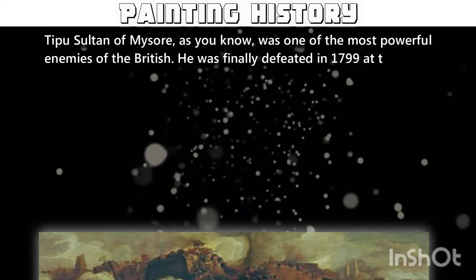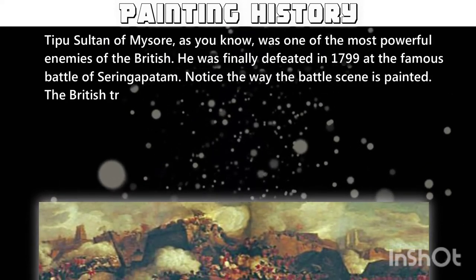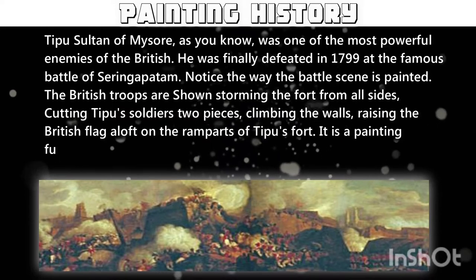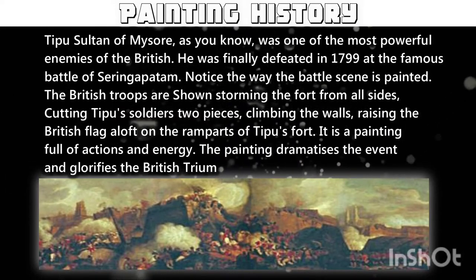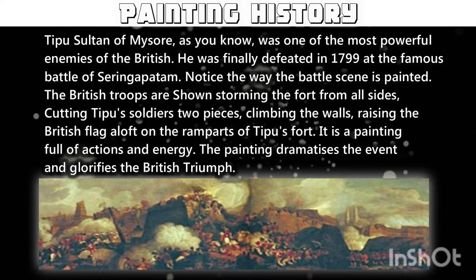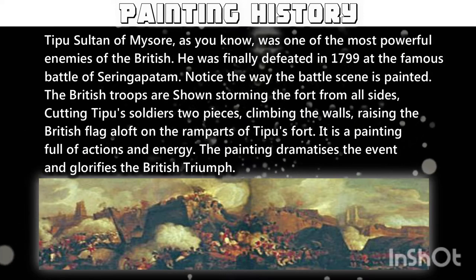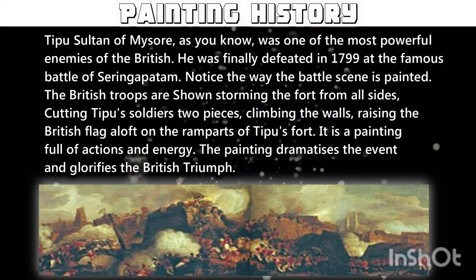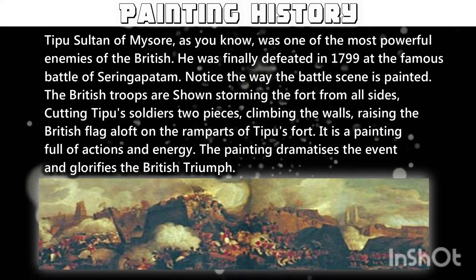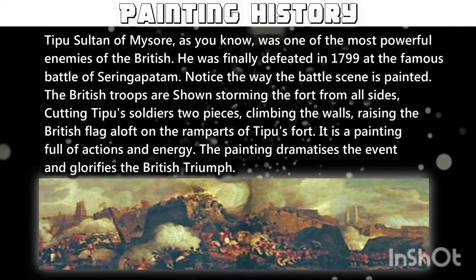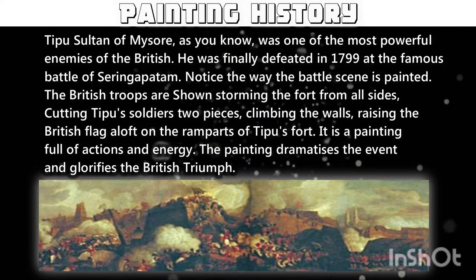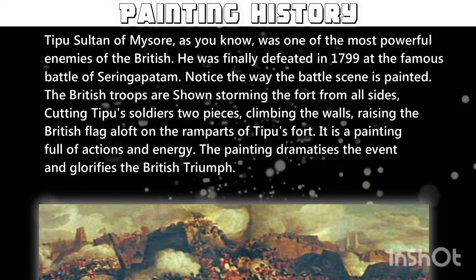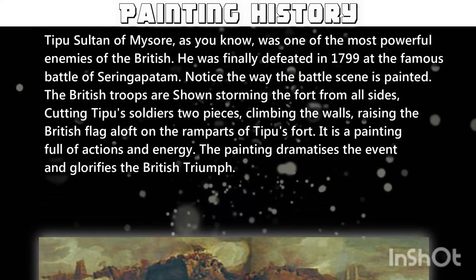In the given figure, you may see the storming of Seringapatam. As you know, Tipu Sultan was one of the most powerful enemies of the British. He was finally defeated in 1799 at the Battle of Seringapatam. The painting dramatizes the event and glorifies the British triumph.